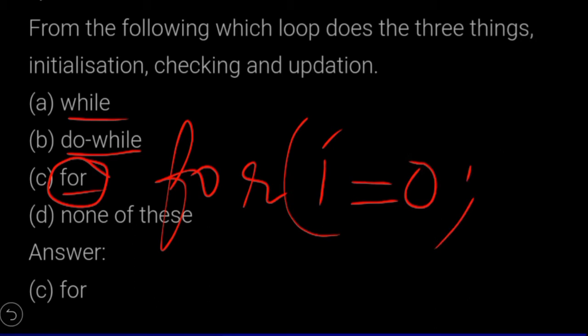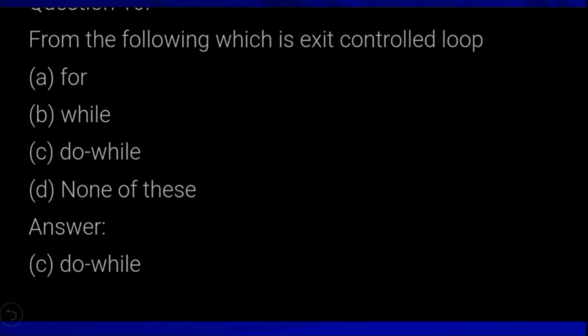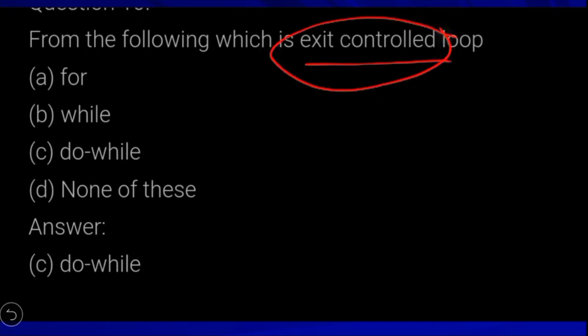The next question is: which is an exit control loop? In an entry control loop, the test expression is checked first; if true, the body of the loop executes. The condition is checked at the entry point.